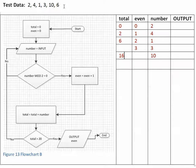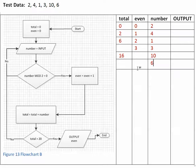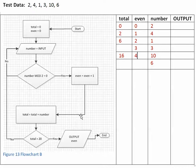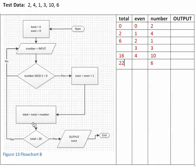We move up and get the next value. The next value for number is 6, so we assign the value 6 to number. We ask: is number mod 2 equal to 0? Yes, it is. So we increment even, then we come down and add 6 onto our total, getting 22.